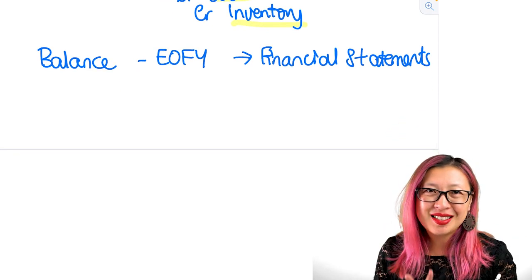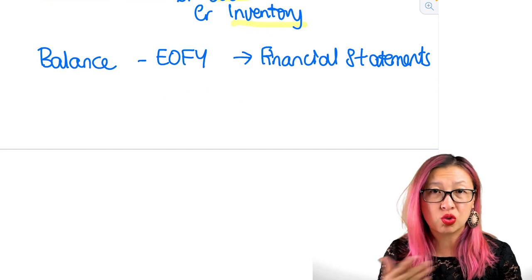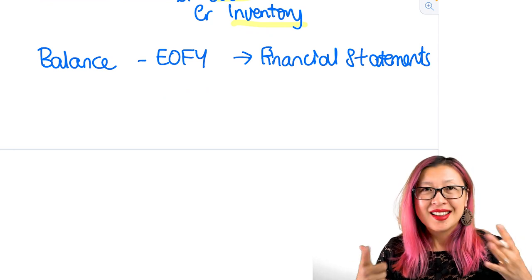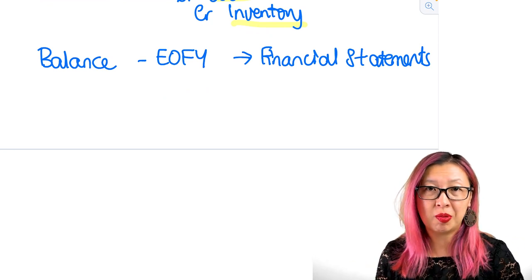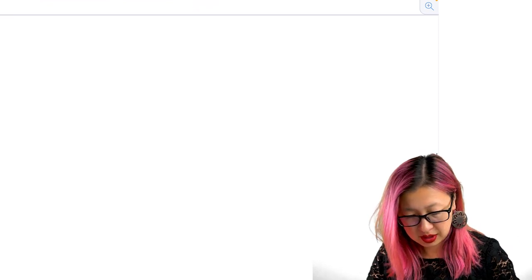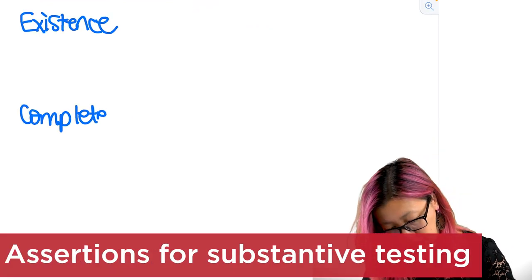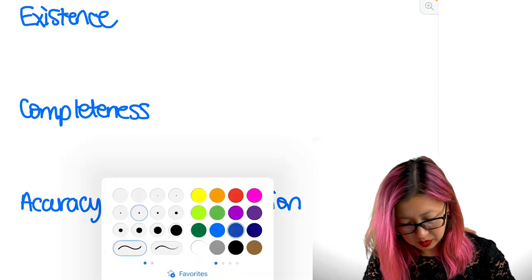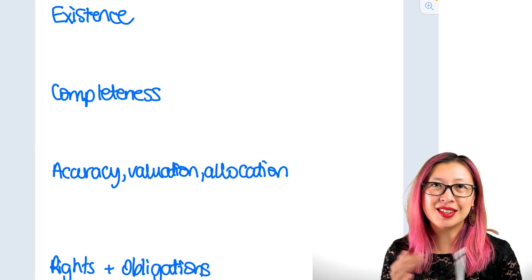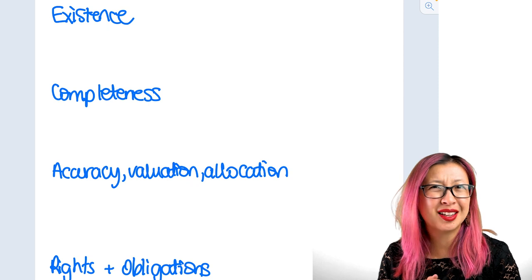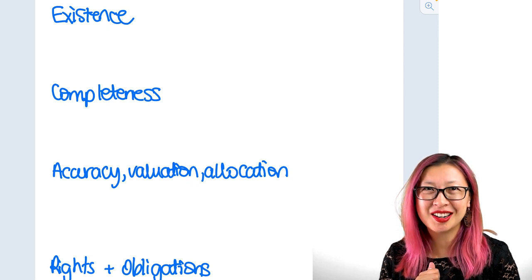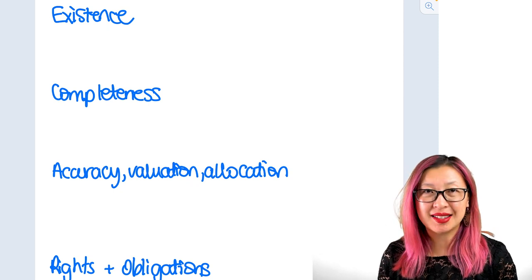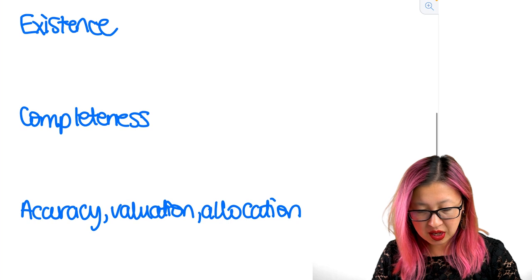So I'm going to be looking at the balance of inventory rather than looking at all of the individual transactions that go into that and you'll be auditing that in other parts of the client. So now let's write down all of the assertions that we need that go with inventory. Okay so here we have our assertions and these are our balance assertions. Remember these come out of ISA 315. I think it's paragraph A128, 129. Existence, completeness, accuracy valuation, allocation, rights and obligations. So we're going to look at each of these in turn.